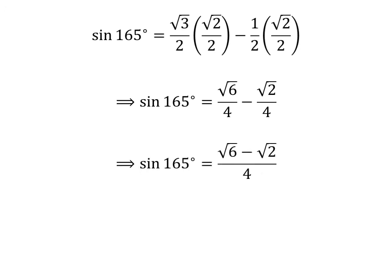As the denominator of both fractions in the above expression is the same, sine of 165 degrees is equal to square root of 6 minus square root of 2 upon 4. Taking out the common factor square root of 2 in the numerator gives us sine of 165 degrees is equal to square root of 2 times open bracket square root of 3 minus 1 close bracket upon 4.